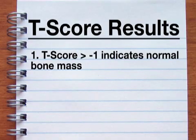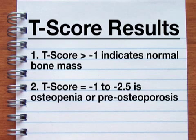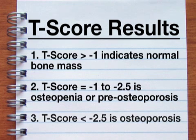A T-score greater than negative 1 is normal, or the same as a patient who has ideal bone mass. A score between negative 1 and negative 2.5 is classified as osteopenia, or pre-osteoporosis, while osteoporosis is a number less than negative 2.5.